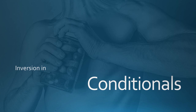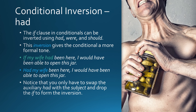Inversion in conditionals. The if-clause in conditionals can be inverted using had, were, and should, giving a more formal tone. With 'had': 'If my wife had been here, I would have been able to open this jar' — 'Had my wife been here, I would have been able to open this jar.' Simply swap the auxiliary 'had' with the subject and drop the 'if' to form the inversion.